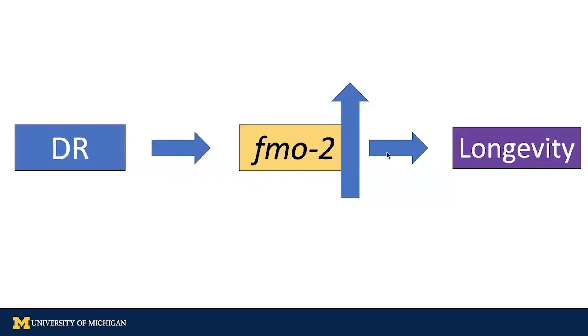So overexpression of FMO2 gene is another important way to make the worms long-lived. FMO stands for Flavin-containing monoxygenase. I know it's a mouthful. This is an enzyme involved in metabolism.